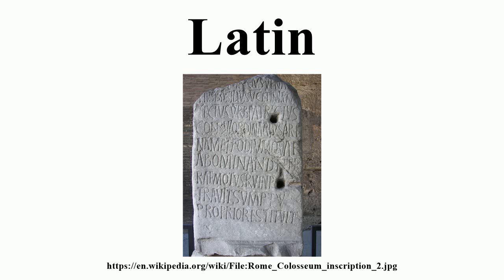Linguistics: Latin influence in English has been significant at all stages of its insular development. In the medieval period, much borrowing from Latin occurred through ecclesiastical usage established by St. Augustine of Canterbury in the 6th century, and indirectly after the Norman conquest through the Anglo-Norman language. From the 16th to the 18th centuries, English writers cobbled together huge numbers of new words from Latin and Greek words. These were dubbed inkhorn terms, as if they had spilled from a pot of ink. Many were used once and then forgotten, though some useful ones survive, such as imbibe and extrapolate.